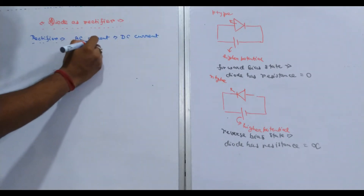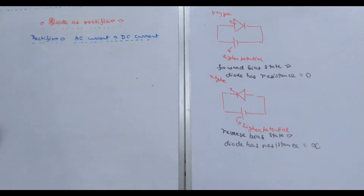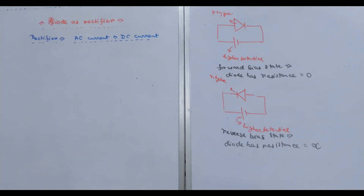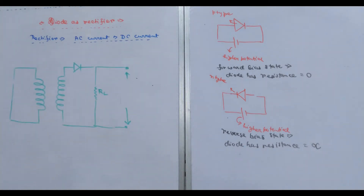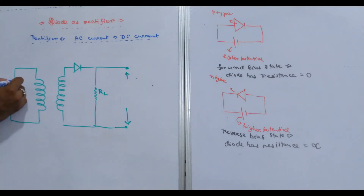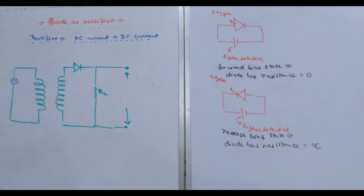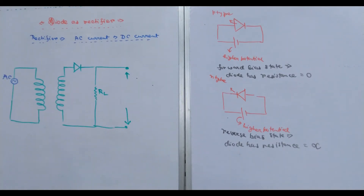We need to build this circuit. The AC current is used in this circuit, and that is nothing but a sine curve. Basically, this is an AC source.